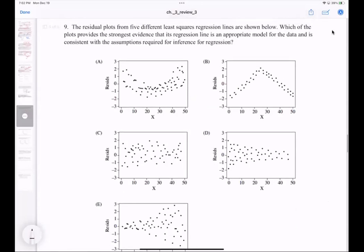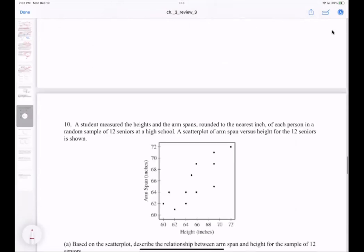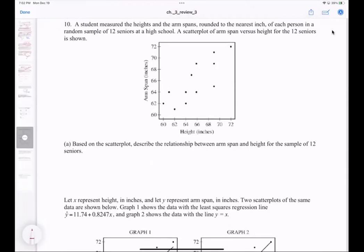Number nine: we're talking about residuals. For the residuals, we want to make sure the line is appropriate, which means we're looking for randomness in the data of the residuals. This is the one that's most scattered, so it's definitely C.